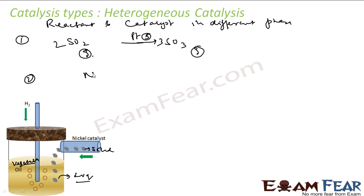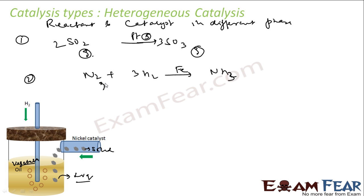Another example is the Haber process: nitrogen plus hydrogen in the presence of iron catalyst gives ammonia. Nitrogen, hydrogen, and ammonia are all gases, but iron is solid — so they are in different phases, making this heterogeneous catalysis.